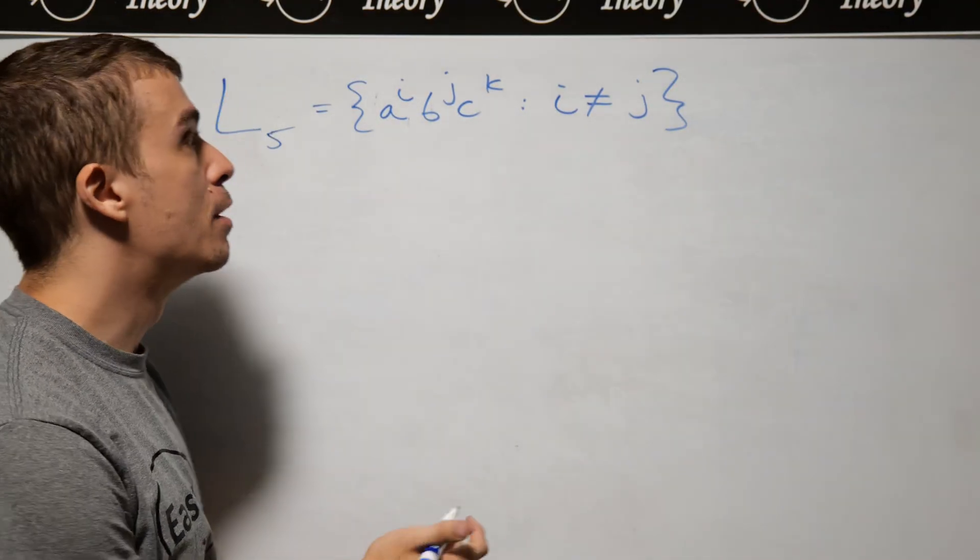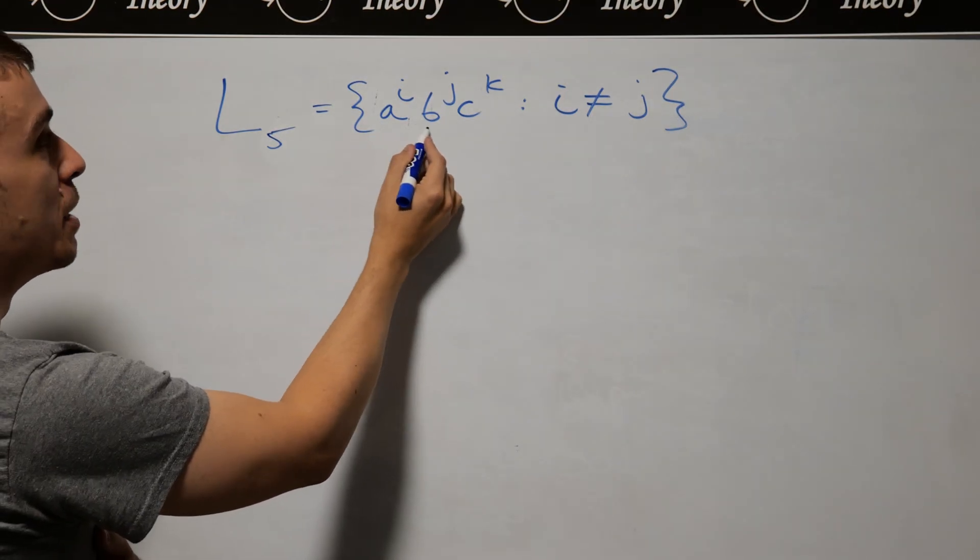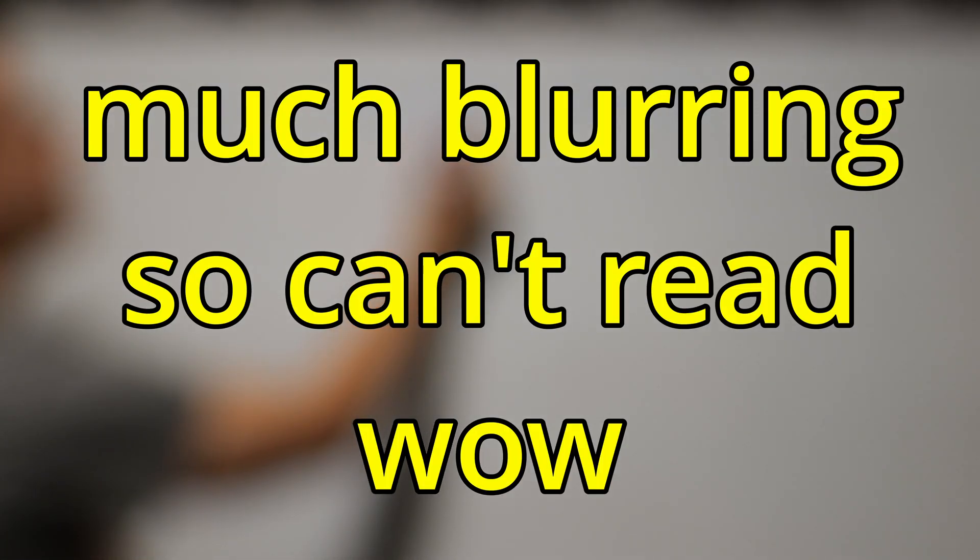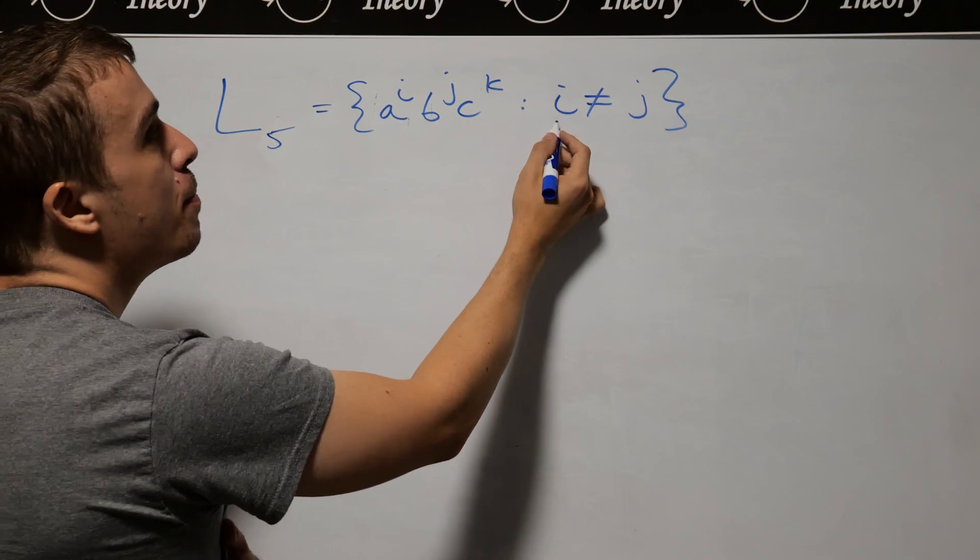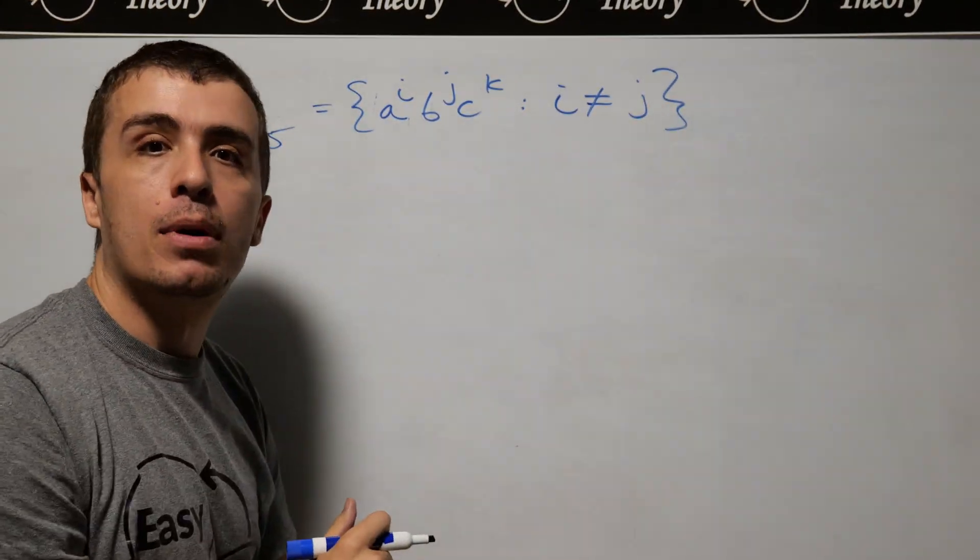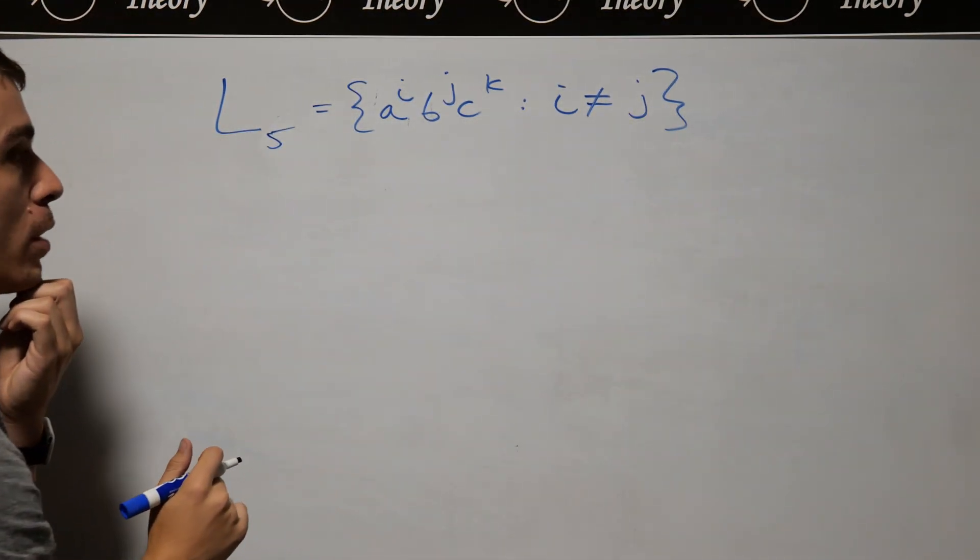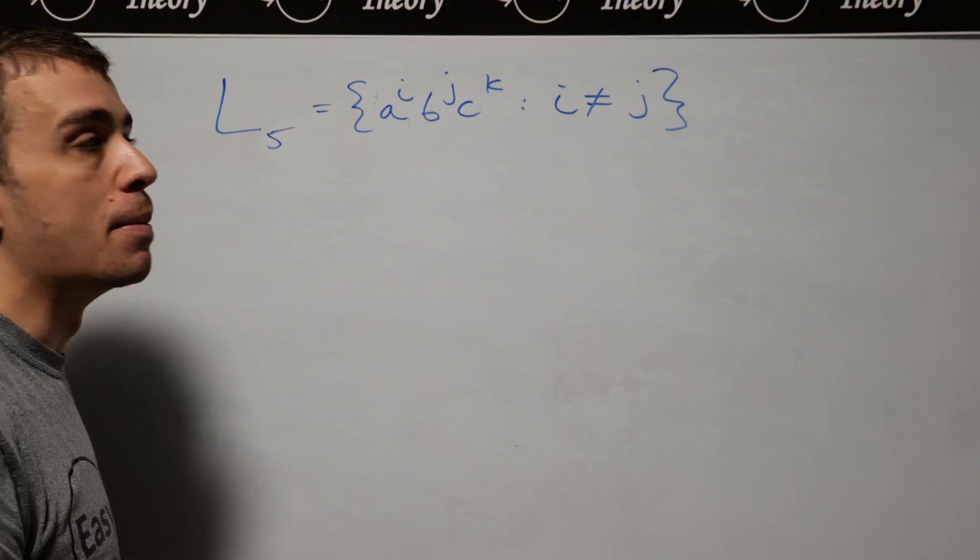Let's make a context-free grammar for this language, which is the set of all strings of the form some number of A's, some number of B's, some number of C's, where the number of A's (which is i) is not equal to the number of B's (which is j). We want to make a context-free grammar for this.